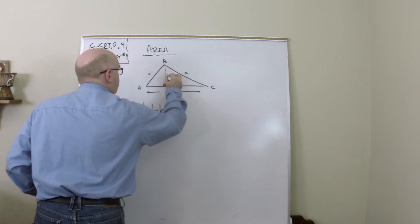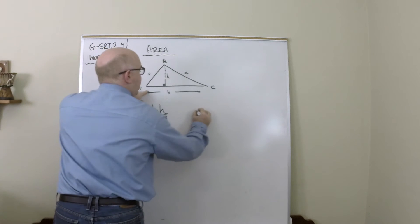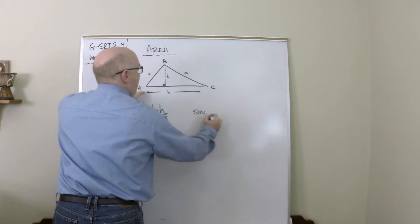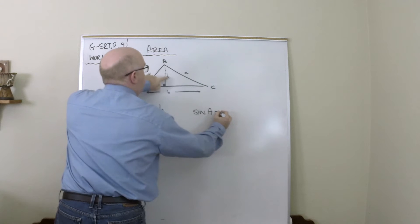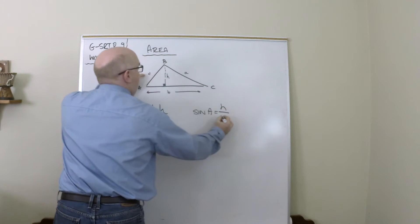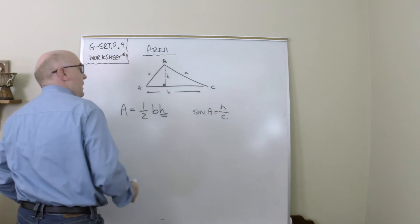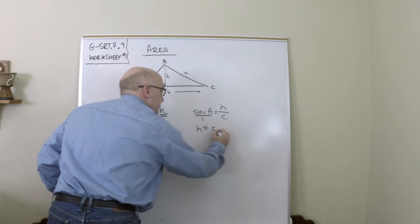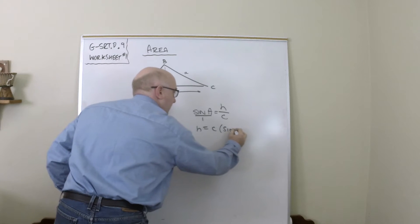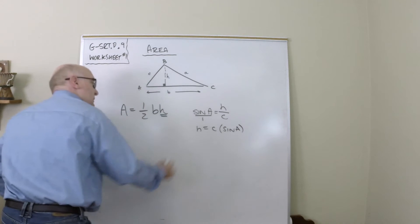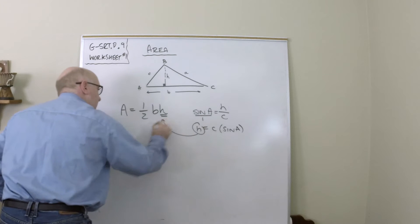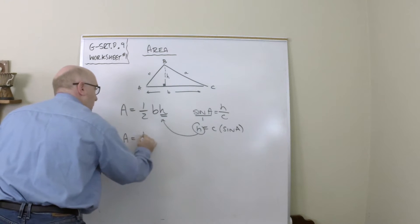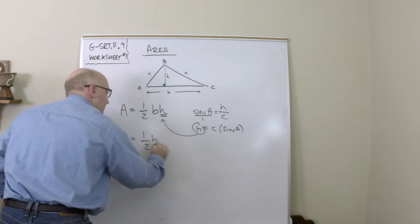I'm going to say I could introduce some trigonometry to help me out. This height here could be found using the sine of angle A is the height over side c. If I do a little multiplication, if I cross multiply this, I get c times the sine of A. Taking this and plugging it in here, I get my formula one-half bc sine of A.